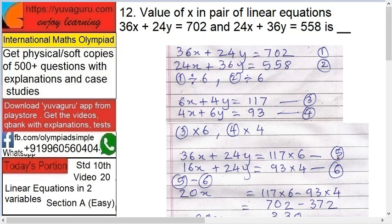One can be divided by six, so it becomes 6x plus 4y equals 117. Now luckily, two can also be divided by 6, so it becomes 4x plus 6y equals 93. It's not compulsory that one and two should be divided by the same number. Luckily, it worked here.